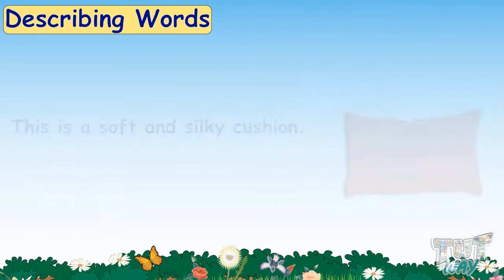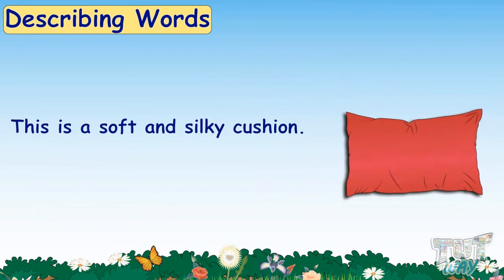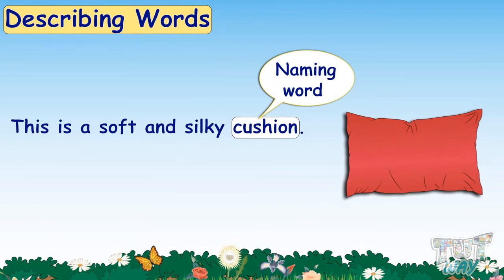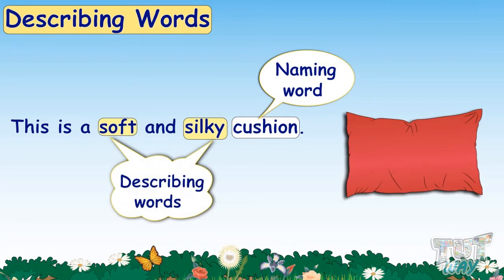This is a soft and silky cushion. Here, cushion is a naming word, as it is an object we are talking about. And the words that describe the kind of object it is — soft and silky — are the describing words for naming word cushion.